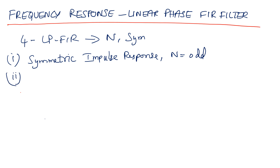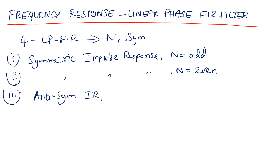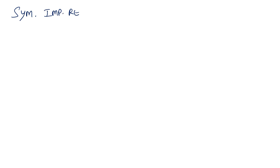The second case is again a symmetric impulse response. The third case is an anti-symmetric impulse response with N equal to odd, and in the last case, anti-symmetric impulse response when N is equal to even. Now let us get into the first case: the symmetric impulse response when N is equal to odd. This is the symmetric impulse response of your linear phase FIR filter when N is set to be odd.